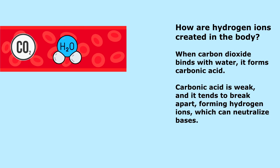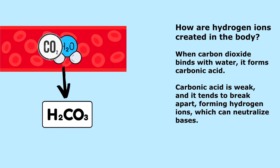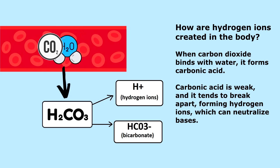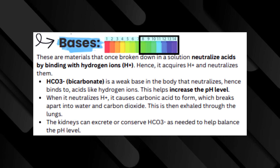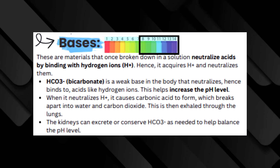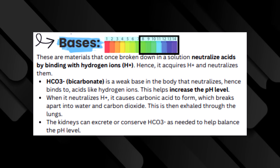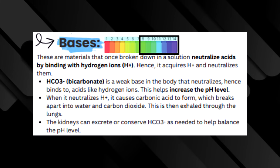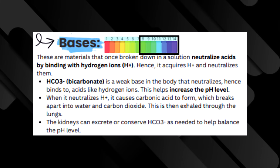Hydrogen ions in the body come from carbonic acid, a weak acid that plays a role in acid-base balance. It forms when carbon dioxide binds with water in the body. Carbonic acid is weak — it breaks apart and creates hydrogen ions. Bicarbonate (HCO3) is a weak base in the body that helps neutralize acids by binding with hydrogen ions, which helps increase blood pH. When it neutralizes hydrogen ions, it causes carbonic acid to form, which breaks apart into water and carbon dioxide, and then this is exhaled through the lungs.